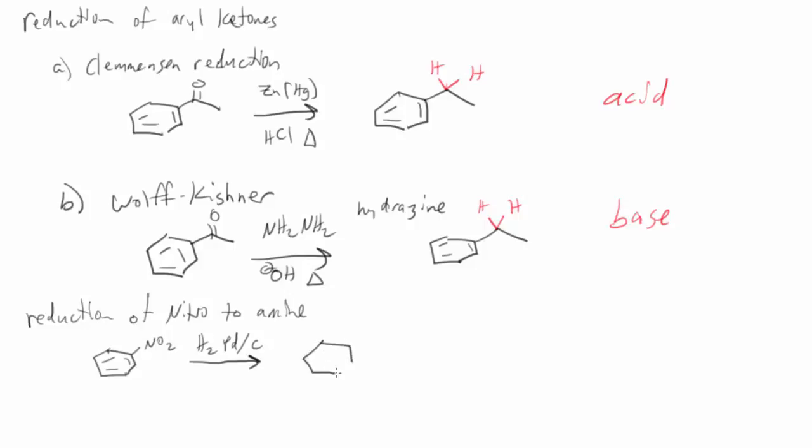However, if you have any alkenes in your molecule or carbonyls in your molecule, you'll also reduce those. So there's a specific reduction that works for nitros that won't reduce carbonyls, won't reduce alkenes, and that's by using tin and HCl. So tin and HCl will accomplish the exact same reaction, except that it's more selective.